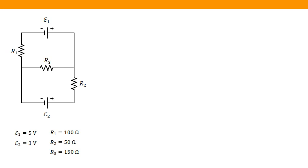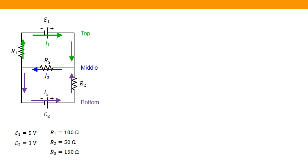I'm going to start by assigning a current to each branch. In the top branch, I assign current I1 going in the clockwise direction. In the bottom branch, I assign current I2 going in the counterclockwise direction. And in the middle branch, I assign current I3 flowing from right to left.